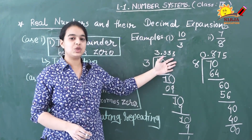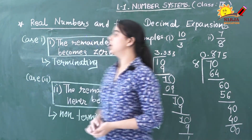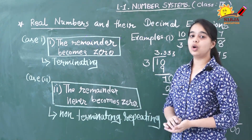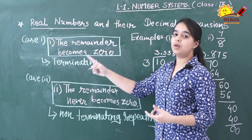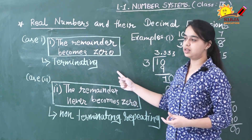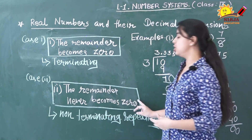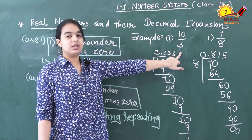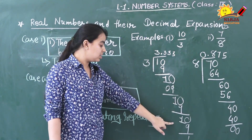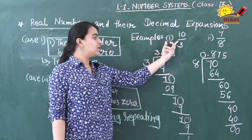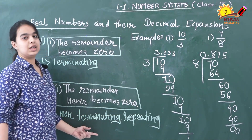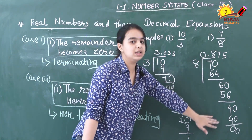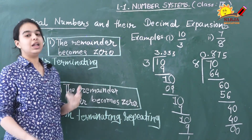Whenever we do the decimal expansion of a rational number, we get 2 possibilities. The first case is that the remainder becomes 0, and the second case is that the remainder never becomes 0. Those rational numbers where the remainder becomes 0 will always have a terminating decimal expansion. Those rational numbers where the remainder never becomes 0 will have a non-terminating repeating decimal expansion. So 10 by 3 is a rational number with non-terminating repeating decimal expansion, while 7 by 8 is a rational number with terminating decimal expansion.